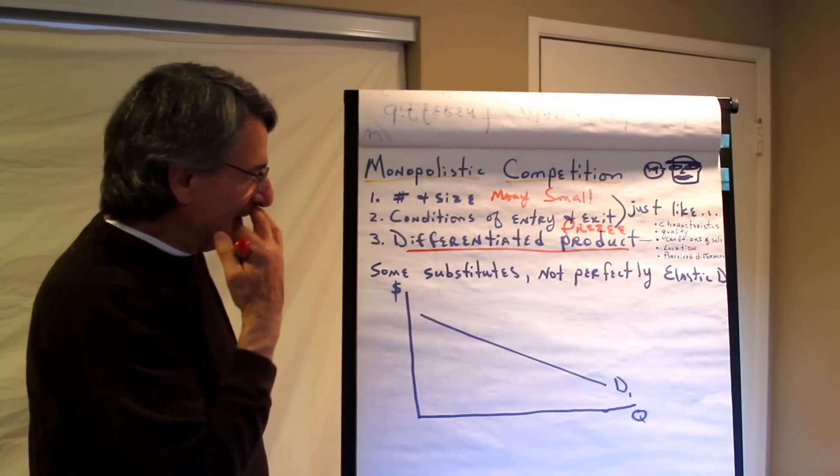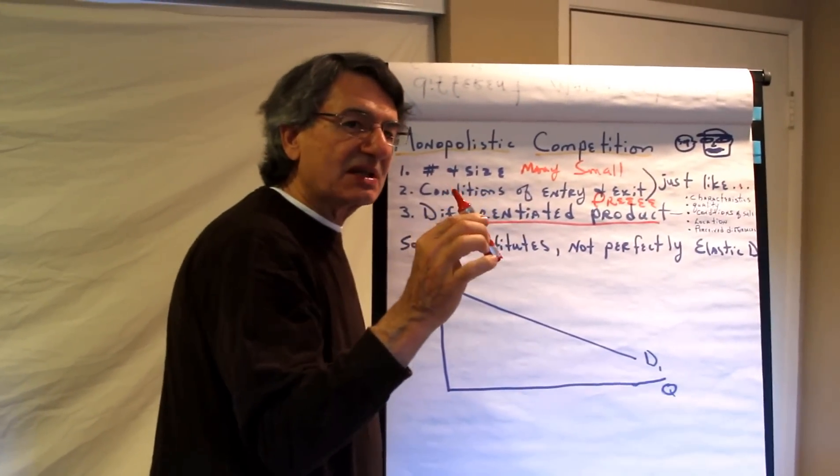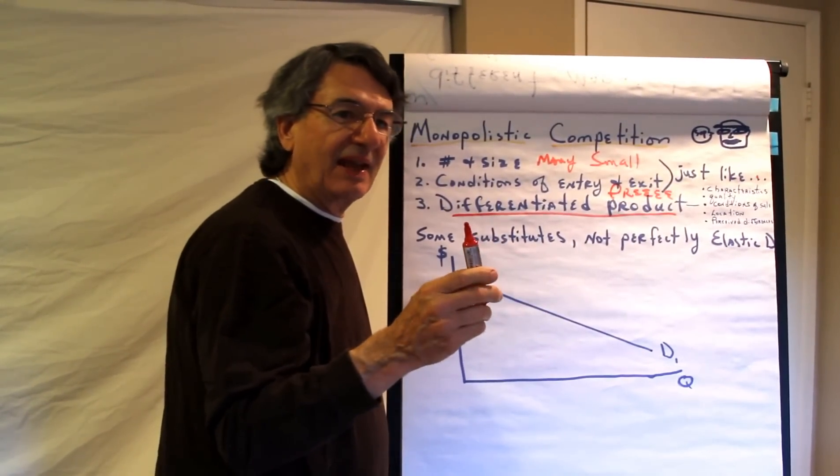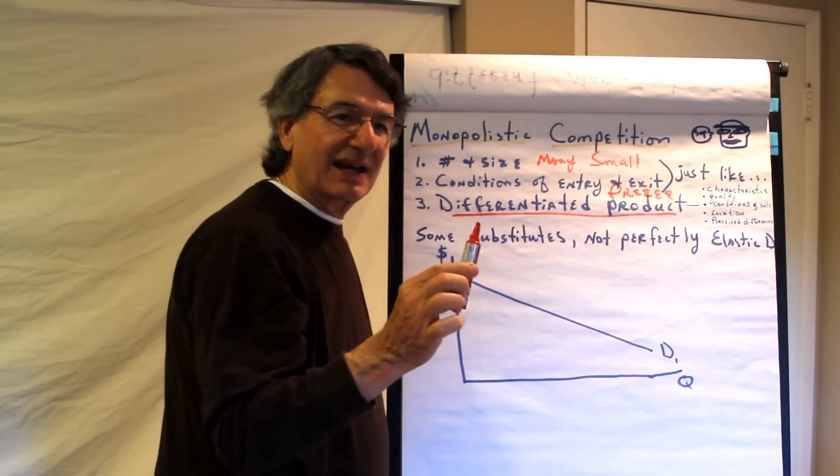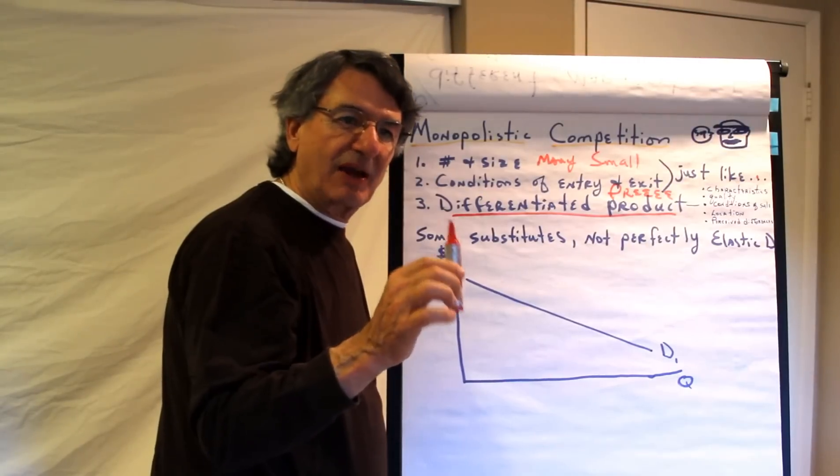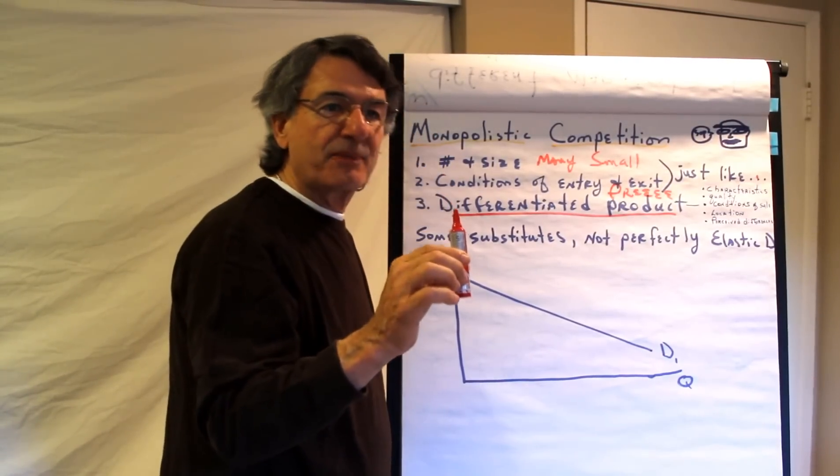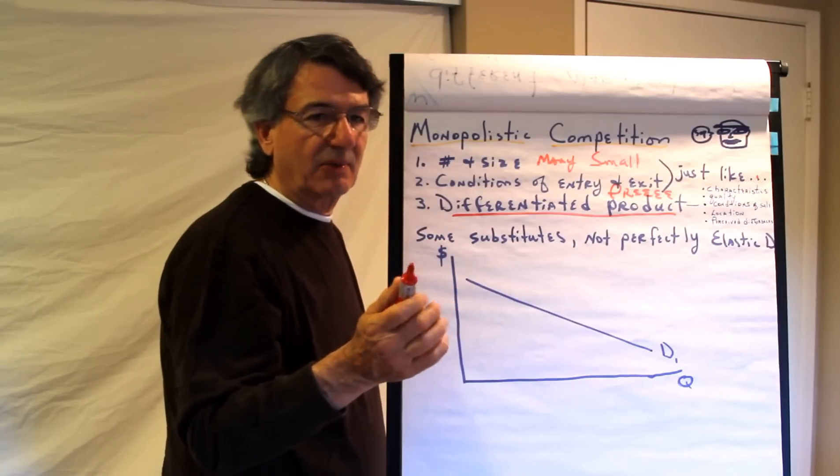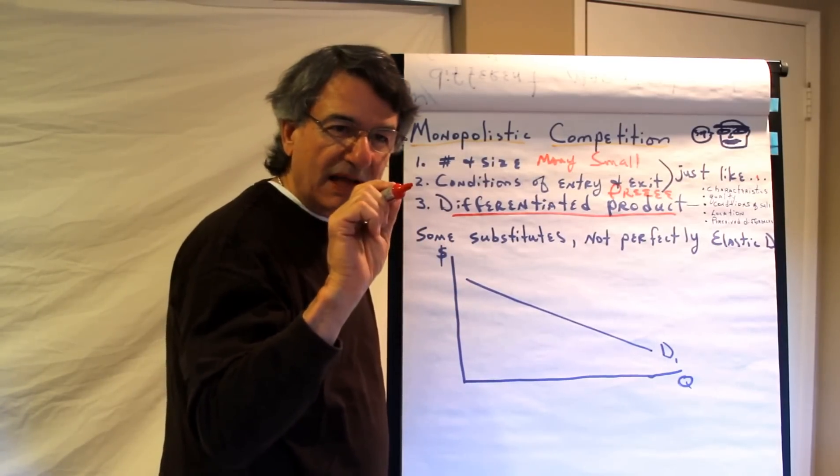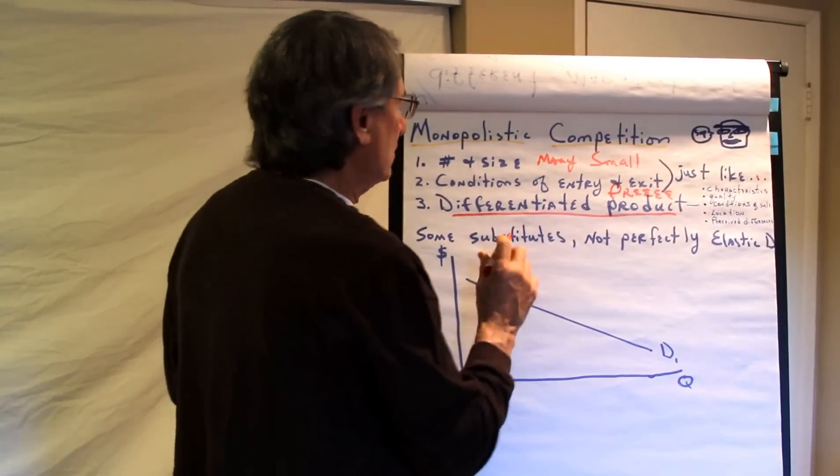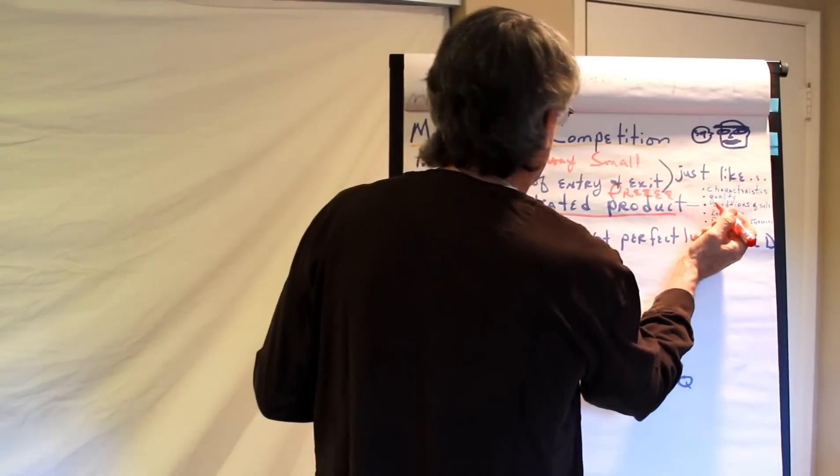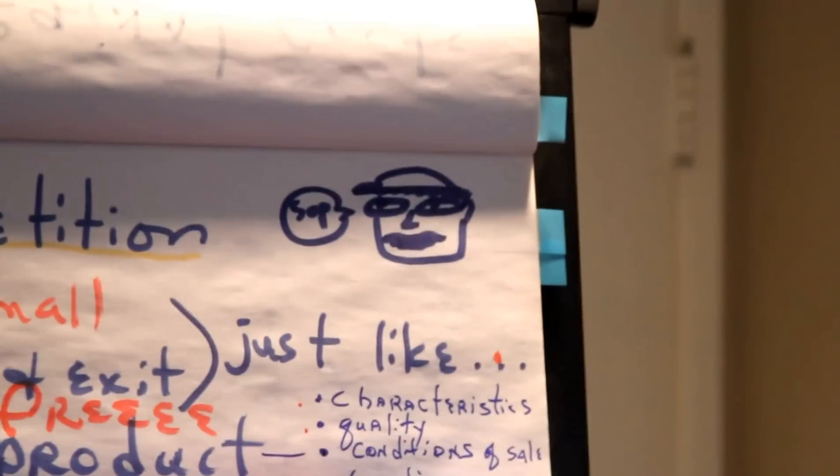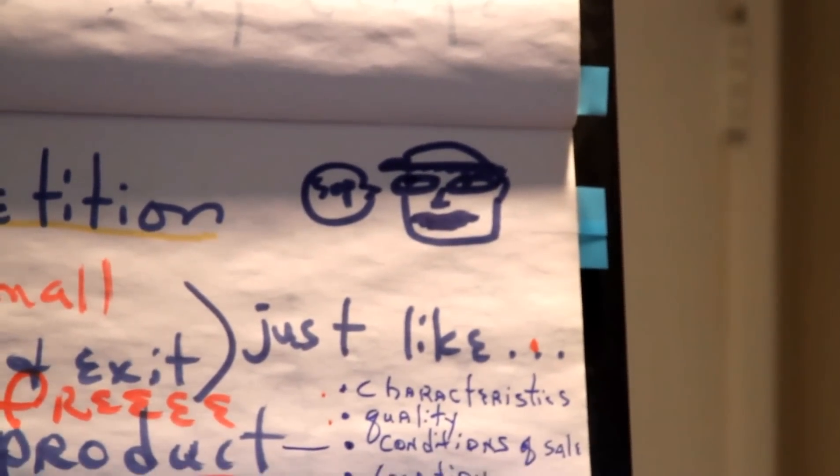Where monopolistic competition differs from pure competition is it produces a differentiated product. And what that means is that it attempts to take a market segment or a product and then differentiate it in some way so that the demand for their product is very slightly less elastic. It's not perfectly elastic anymore. They're really creating satisfying product niches. So the product differentiation could be based on characteristics, quality, conditions of sale, location, or perceived differences.